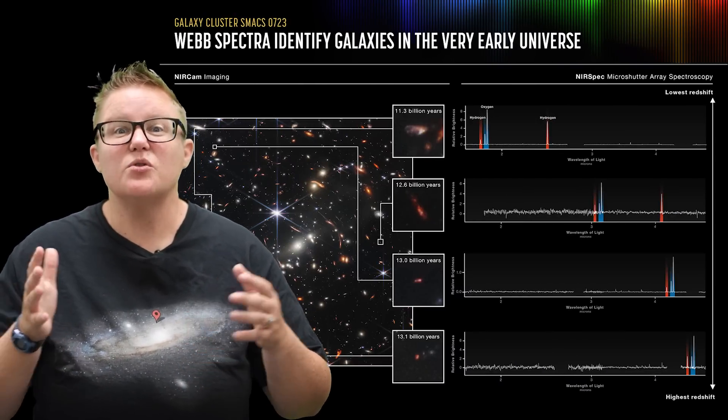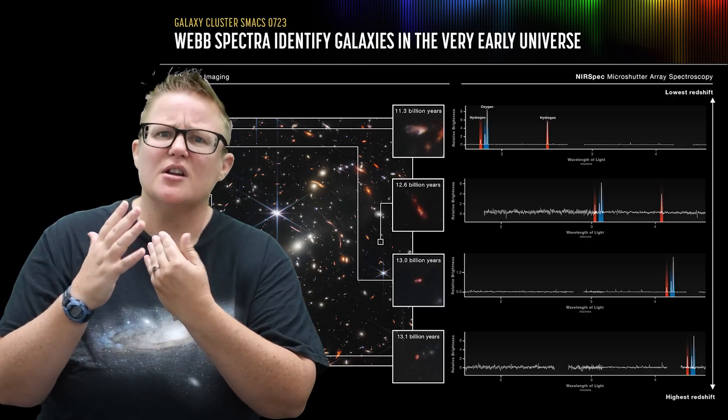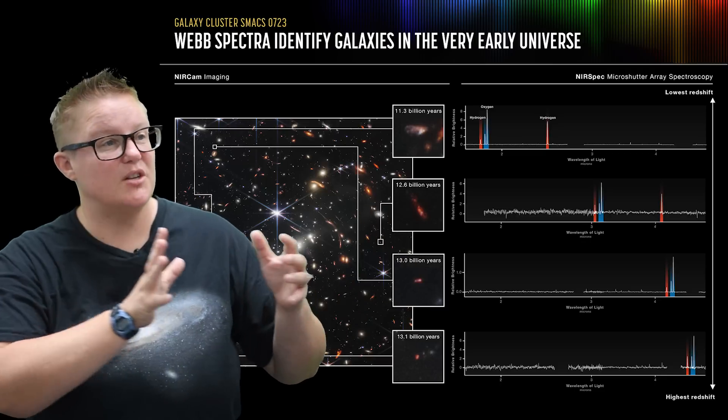As objects move towards you, those wavelengths tend to get a little more closer, jammed together, and it shifts towards the blue. And when things are moving away from us, they shift towards the red.